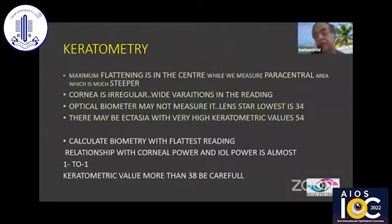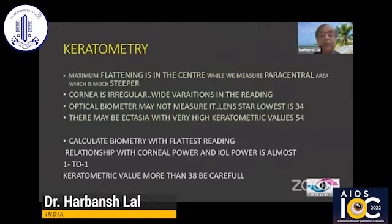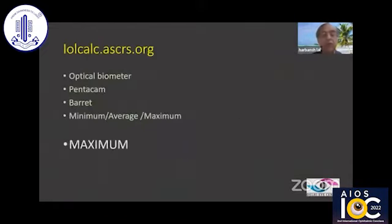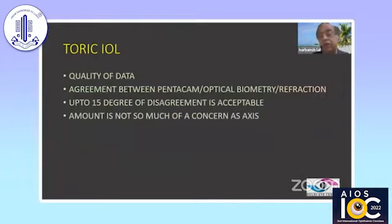Maximum flattening is in the center while we measure the paracentral area with all the equipment. Optical biometers — sometimes the cornea is so flat that the optical biometer may not be able to measure it at all. There may be ectasia with very high keratometric values, which if you do not pay attention may cause a lot of error. So once you have taken the measurements on the Pentacam and optical biometer, put it into the IOL calc ASCRS and use the Barrett. It gives you Barrett minimum, average, and maximum.